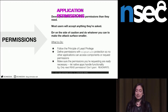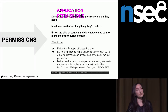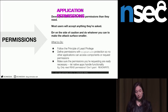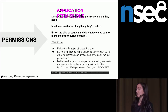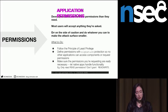The principle of least privilege states that in a particular abstraction layer of a computing environment, every module — whether a process, user, or program — must be able to access only the information or resources it absolutely needs and nothing else. For example, if you only need write permissions, just give write permissions. It's also important to define permissions with signature protection, meaning no other applications can request access through your application — great for self-contained apps.